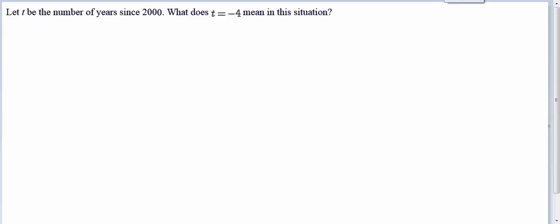Hi. In this example, we're given the variable t, and we're told that it represents the number of years since 2000. And then they tell us this: t equals negative 4, and we're asked to interpret what that means.